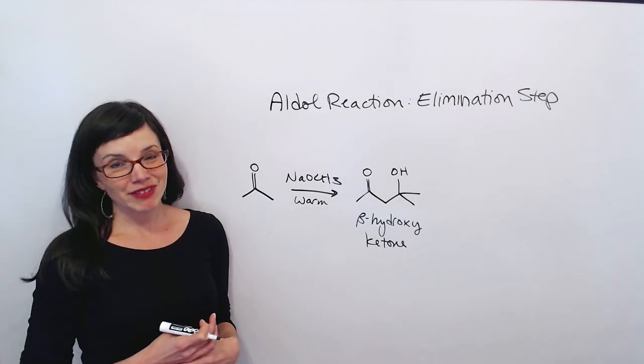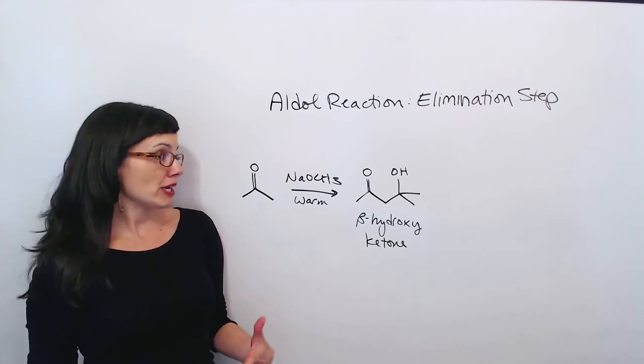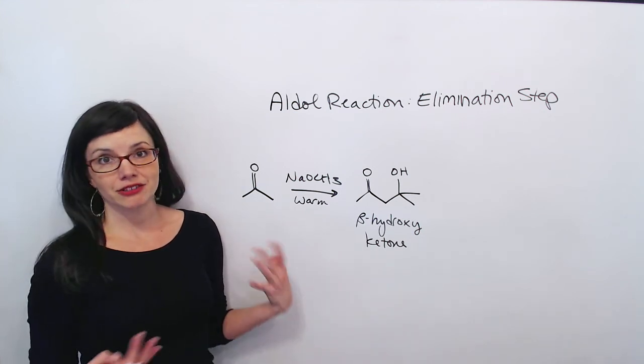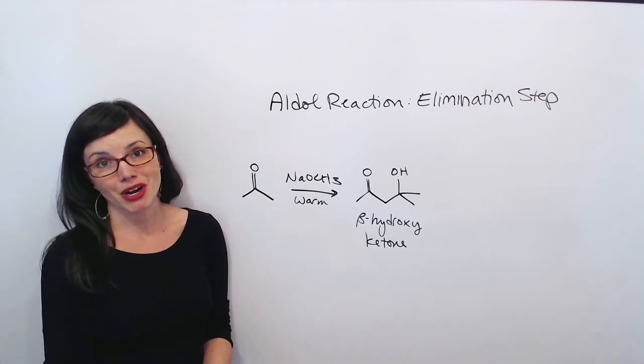If you've watched the second video in my series on predicting products of aldol addition reactions, then you should be pretty comfortable with how I took this ketone, acetone, and created this beta-hydroxy ketone, an aldol addition product.